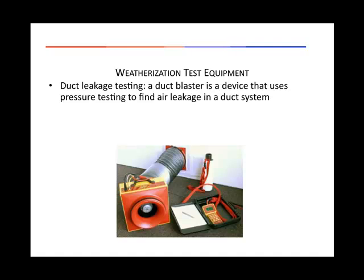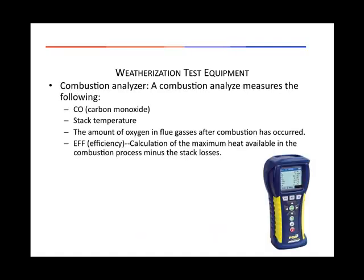A duct blaster is a device that uses pressure testing to find air leakage in duct systems. A combustion analyzer measures carbon monoxide, stack temperature, the amount of oxygen and flue gases after combustion has occurred, and efficiency.